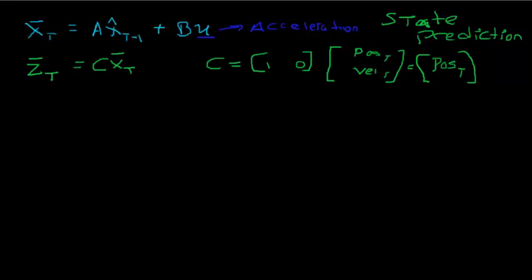There's another prediction we do, which is for the covariance matrix. I think it's more natural to explain the covariance matrix prediction at the end of the derivation, since it makes a little more sense there. But the covariance matrix p has a prediction step — I'll denote it p_bar — and it's going to equal something we'll cover in the derivation. Just know that the covariance matrix p also has both an update and a prediction step, and we'll also denote those accordingly.